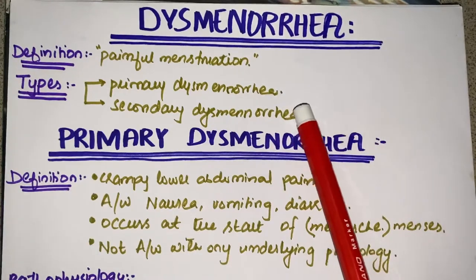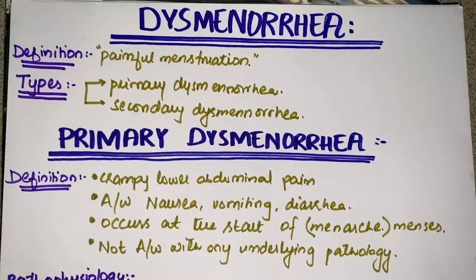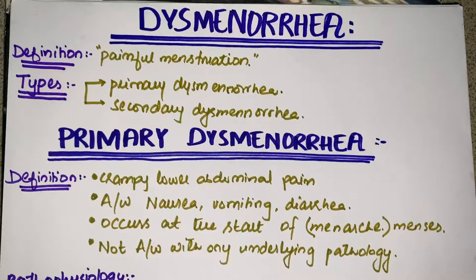Dysmenorrhea has two major types: primary dysmenorrhea and secondary dysmenorrhea. As a general rule, whenever a disease is classified as primary, it occurs solely because of that particular system or area — not associated with any other disease or underlying pathology. Secondary dysmenorrhea, on the other hand, occurs because of an underlying pathology — secondarily to some other condition.